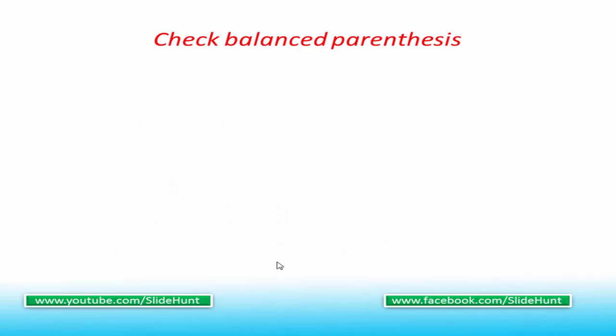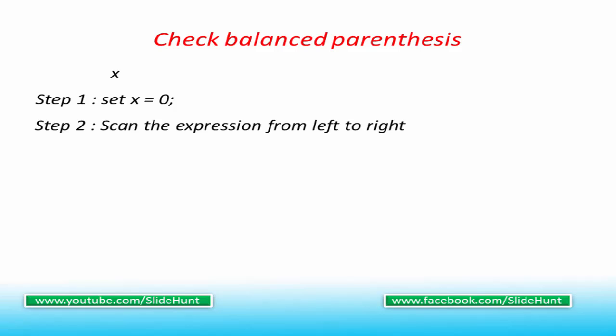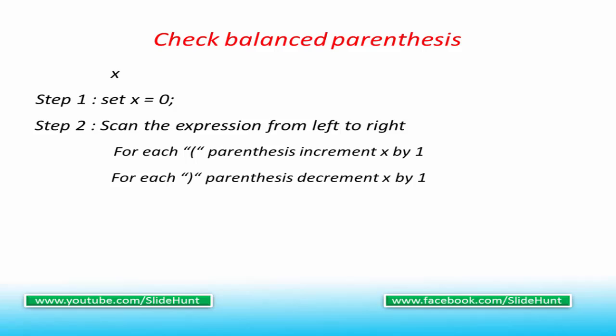Next we learn how to check whether an expression is balanced or not. Here we use a variable, let's say x, to measure the balance factor. Initially we set x equal to zero. Next we scan the expression from left to right. For each opening parenthesis we increment x by one, and for each closing parenthesis we decrement x by one. We stop scanning if x becomes less than zero.